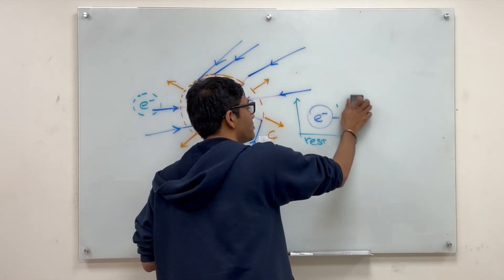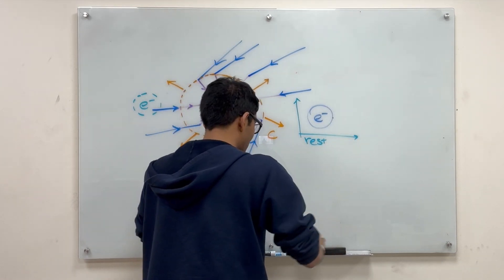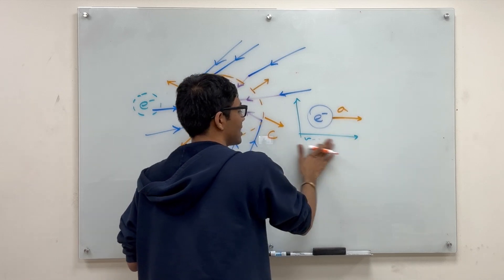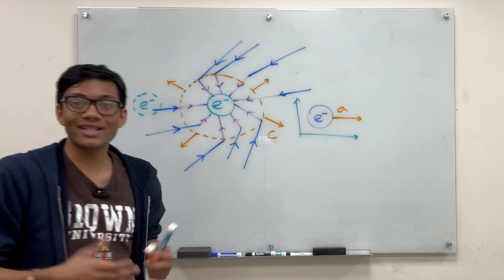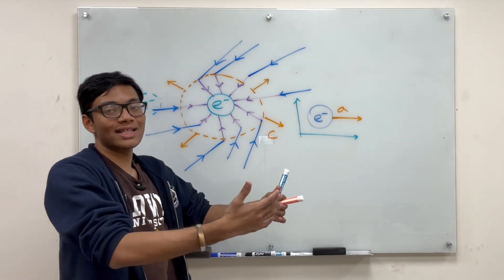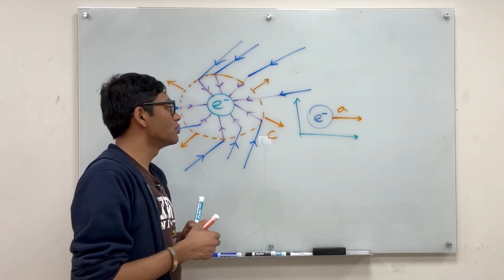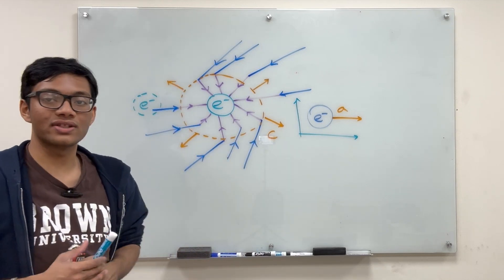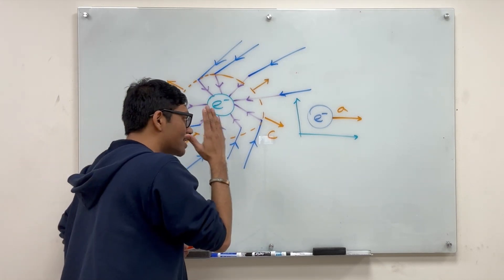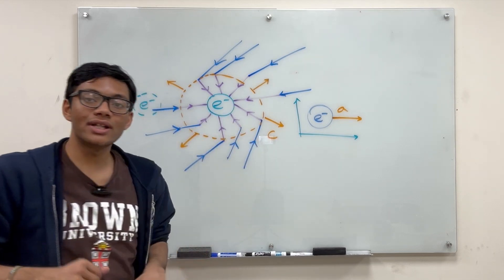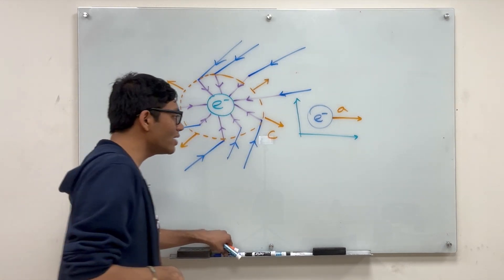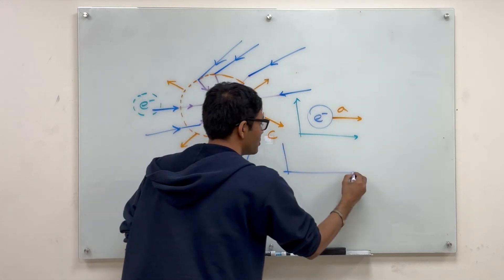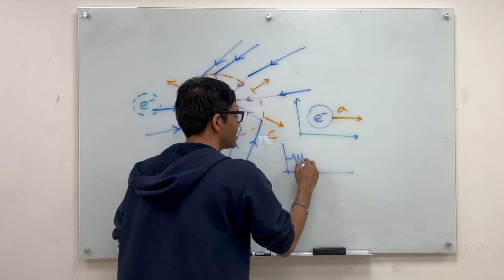On the other hand, there is no way you can Lorentz boost to a frame where the electron is not accelerating. If this electron does have some constant acceleration, there is no rest frame of the electron. You have to be co-accelerating with the electron to see it not moving. But co-accelerating frames are not inertial reference frames. And so because of that, electrons that are accelerating do emit radiation. And in fact, there is a very simple way we can calculate the radiation they emit. We can use a simple harmonic oscillator model.